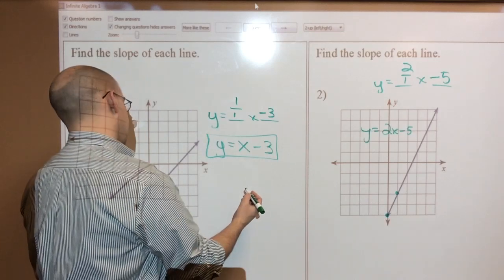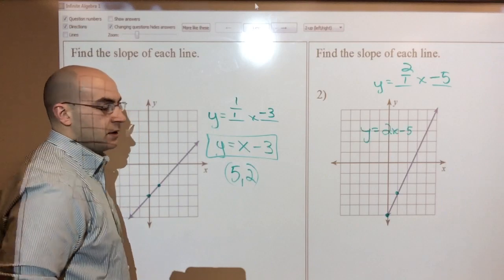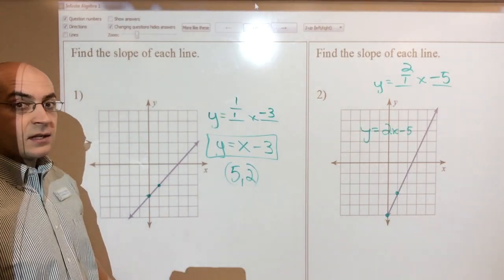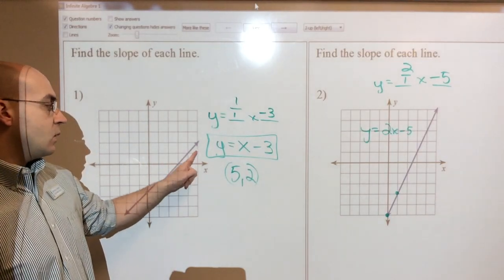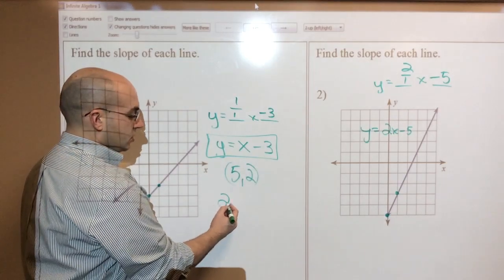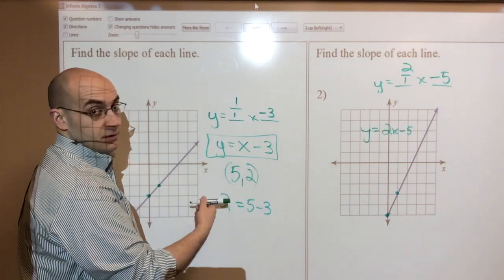Let's go with 5, 2. See if that's on that line. It definitely is on that line. You can see from the graph itself, right? 1, 2, 3, 4, 5, 1, 2. So that is on the line, and we can plug it in to make sure. So 2 is a y value, and that equals 5 minus 3. So that is true.